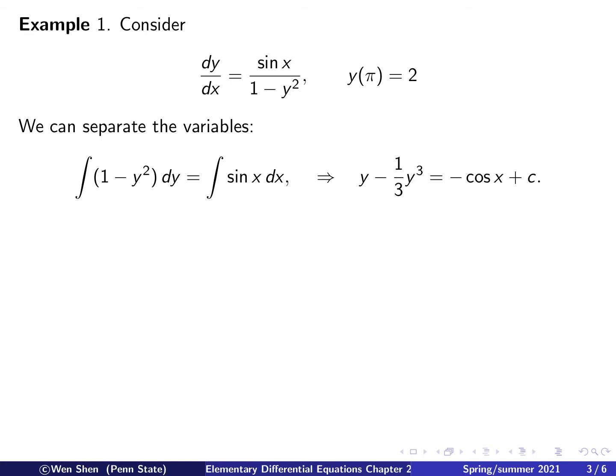Now, working out the integrals, we have integrating 1, we get y, negative y squared, we get negative one-third y cubed, and then the right-hand side integral of sin(x) is negative cosine(x). And don't forget the arbitrary constant c.